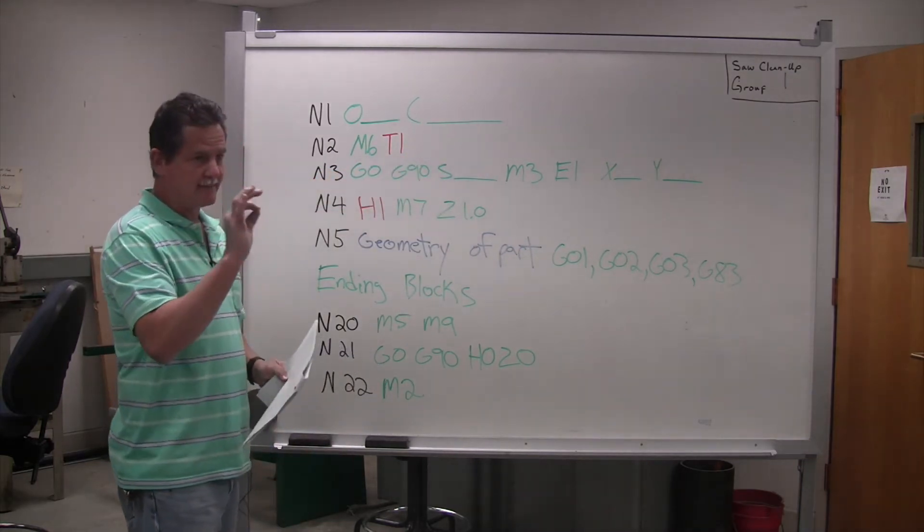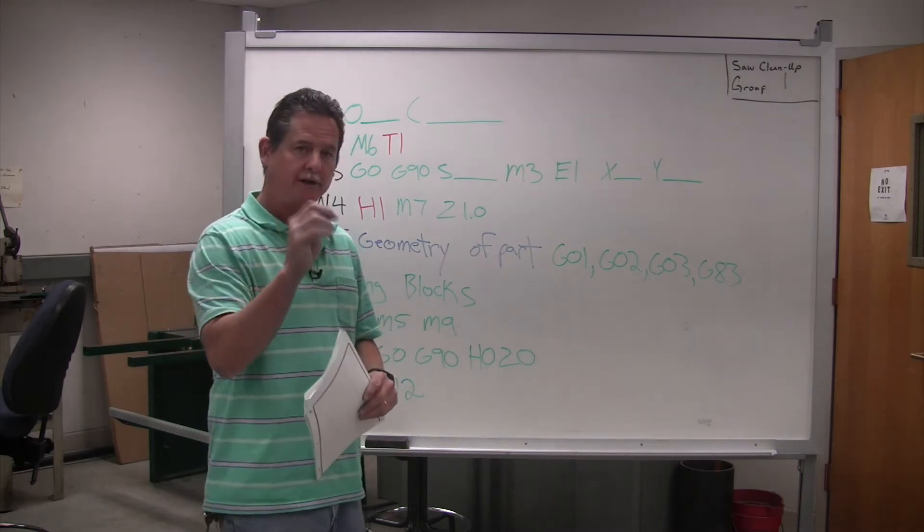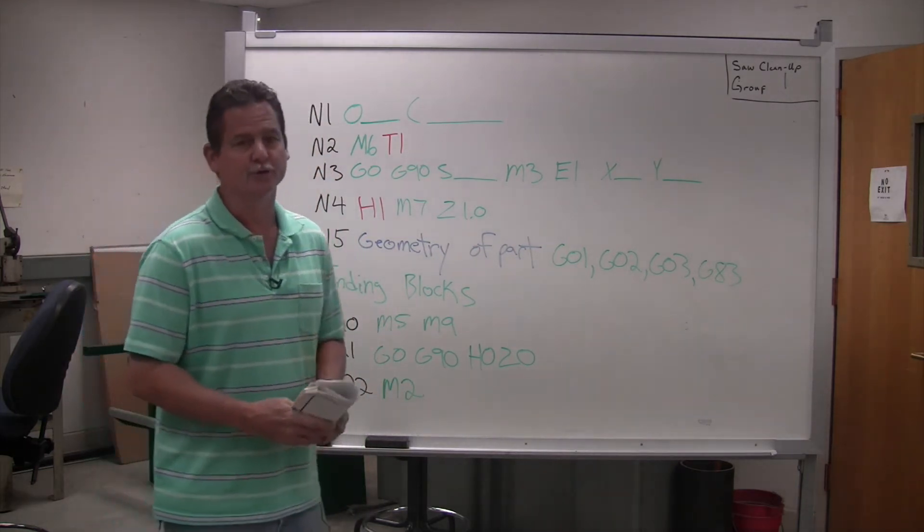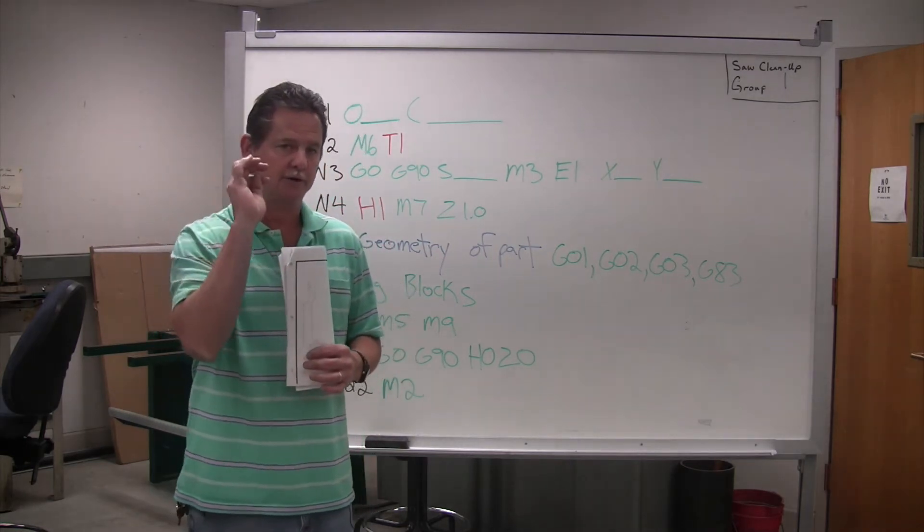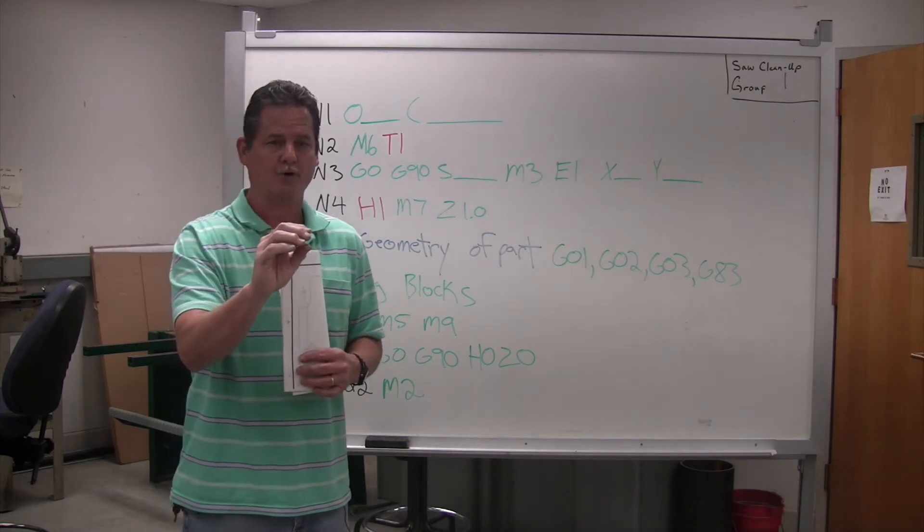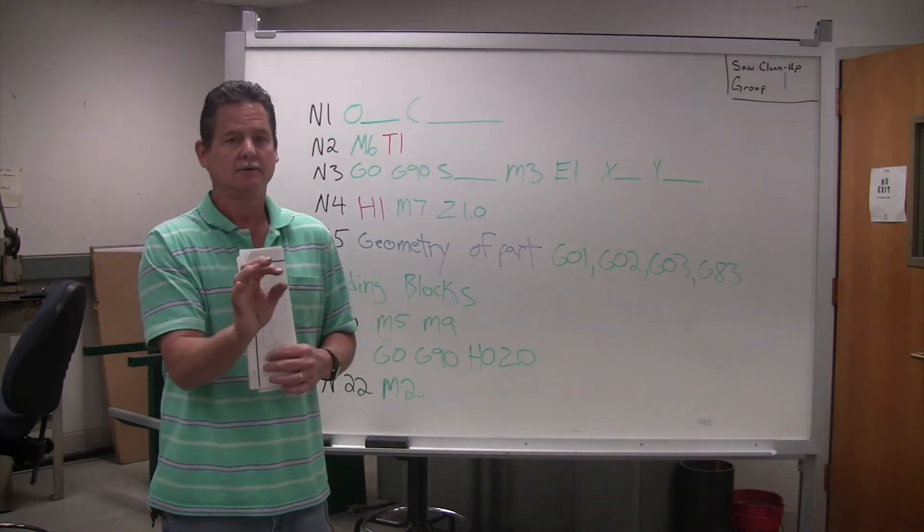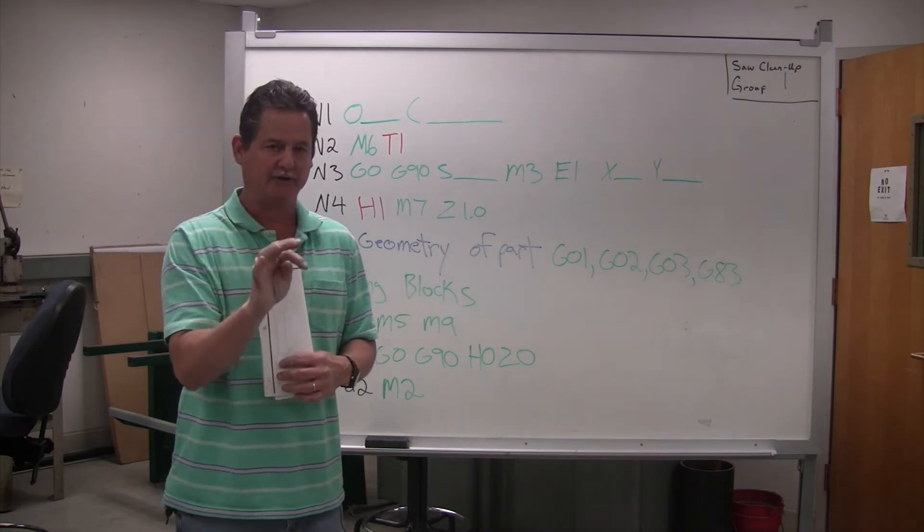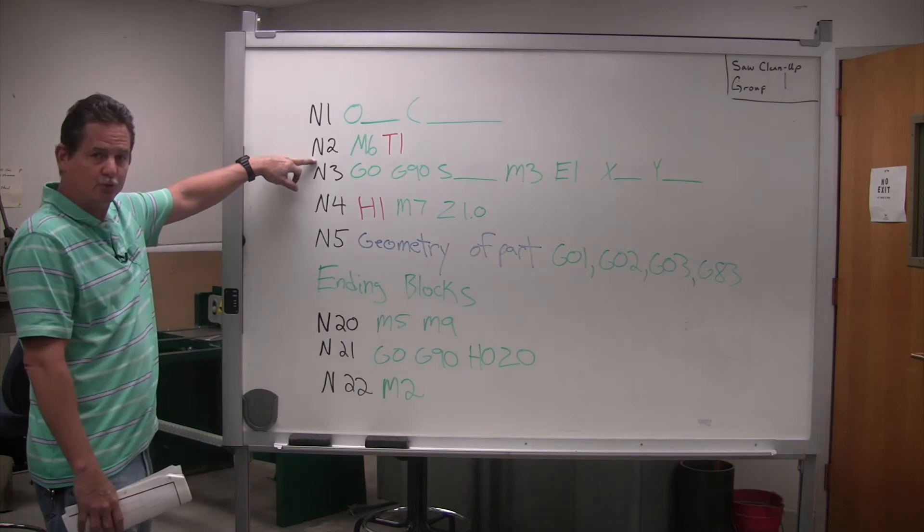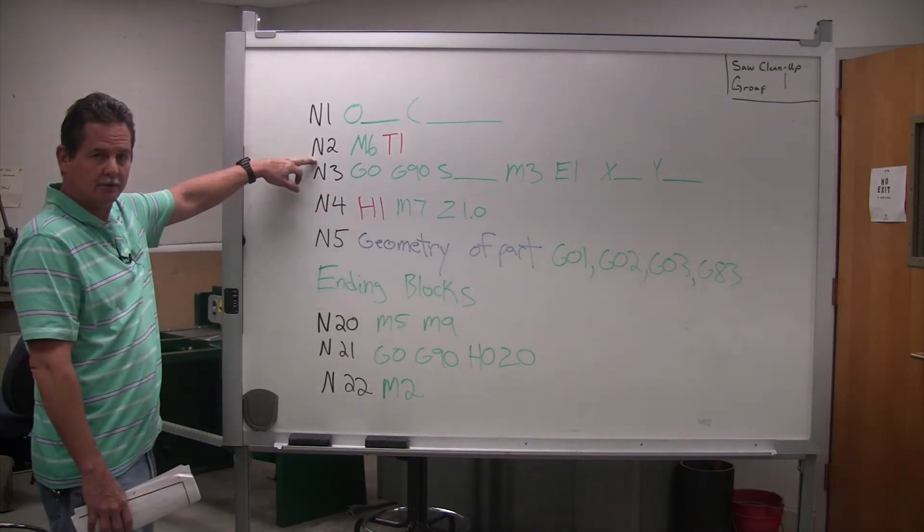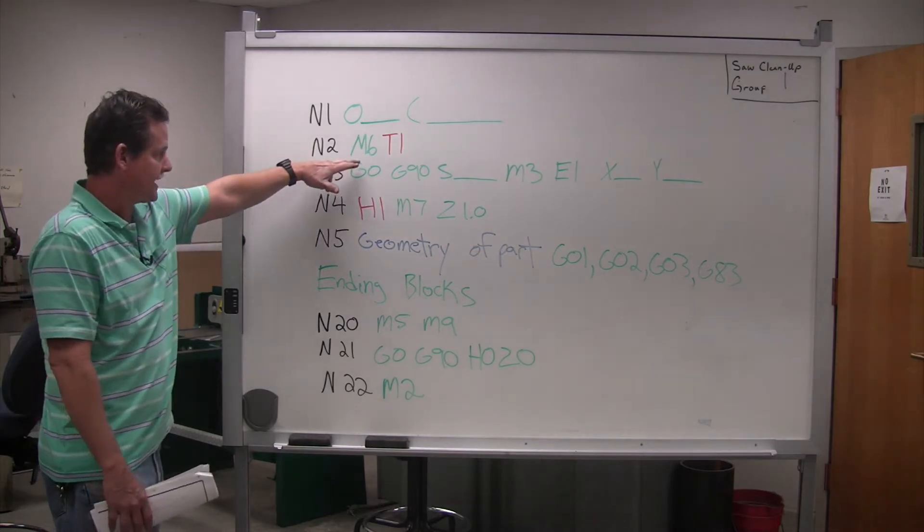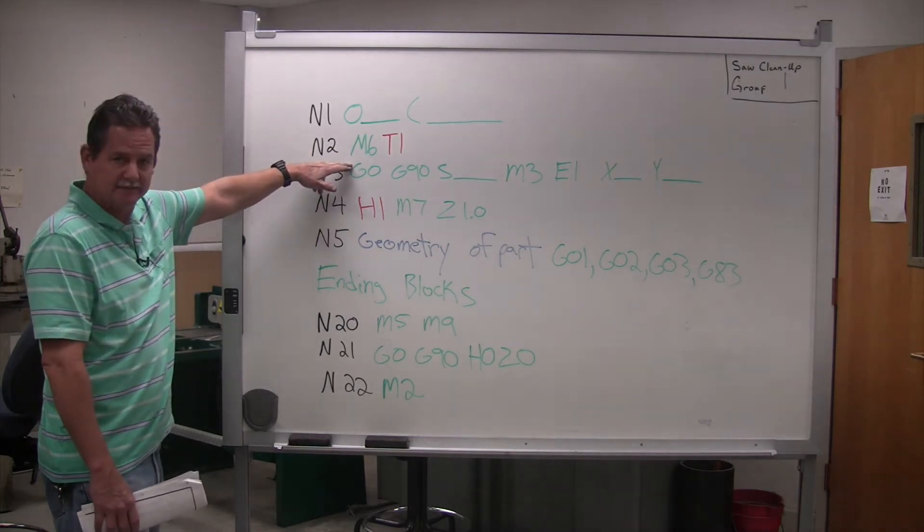Now once you type that in, you'll hit enter. When you hit enter, the machine will drop. I'm sorry. You'll hit insert. You'll type that in. You'll hit enter. That line will go into your program. You'll see one single line. Then you hit the I for insert. When you do that, the machine will drop down N2 into your program. It'll be blank. It'll just say N2. Then you can start writing the next line.